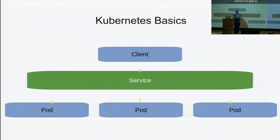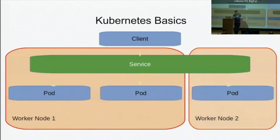So when you deploy something onto it, especially if it's a web service, you have this software abstraction which is a service that sits in front of your applications. What's nice about that is it can span multiple nodes in your cluster. Each pod is a container just running your application — there can be other components in that pod besides the main application container. The service will then route requests from any client through to the pods that support that application, wherever they're located in your cluster.